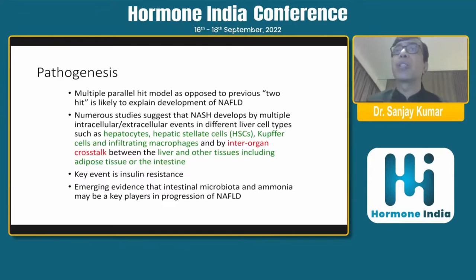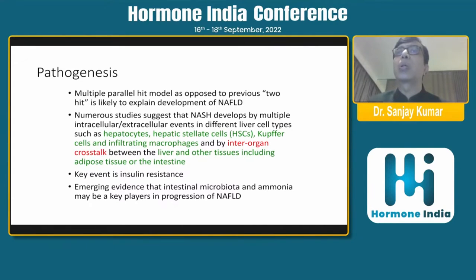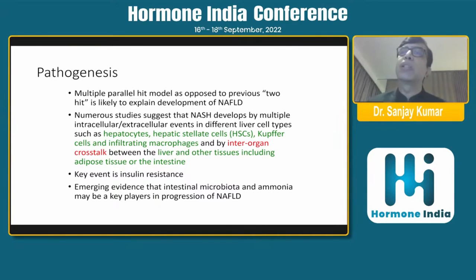The progress of disease in genetically predisposed patients is faster. As far as pathogenesis is concerned, it is believed to be a multiple HIT model, as opposed to the previously believed two-HIT model. Numerous studies suggest NASH develops through multiple intra- and extracellular events in different cell types — hepatocytes, hepatic stellate cells, Kupffer cells, and macrophages — with inter-organ cross-talk between liver and other tissues, especially muscle, adipose tissue, and intestines. The key event is insulin resistance, with emerging evidence that intestinal microbiota and ammonia are key players in progression.